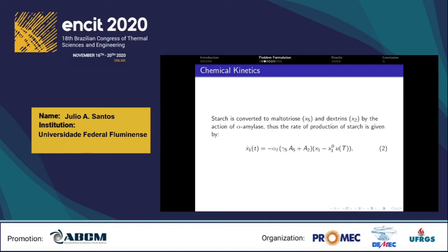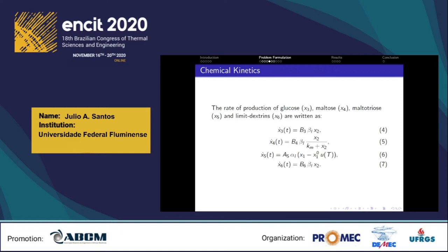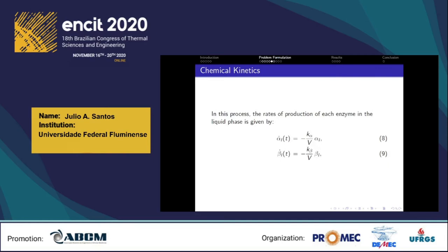U is the mass fraction of ungelatinized starch as described before. Dextrin is converted to glucose, maltose, and limit dextrins by beta amylase enzyme; the rate of production of dextrins is written as the following equation. The coefficient gamma 3 corresponds to the mass fraction of dextrin consumed as glucose is produced, and the coefficient gamma 4 corresponds to the mass fraction of dextrin consumed as maltose is produced. The rates of production of glucose, maltose, maltotriose, and limit dextrins are written as follows.